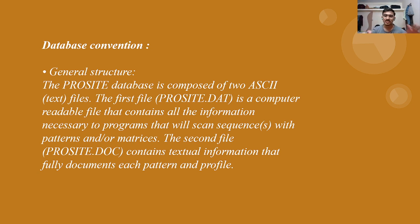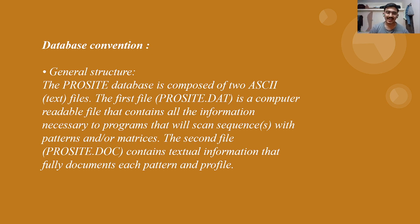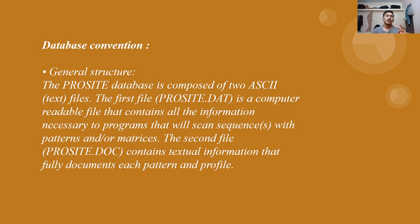The PROSITE database has two ASCII files in its general structure. ASCII stands for American Standard Code for Information Interchange. These ASCII text files are normal text files in which most characters are encoded in a blank format and are saved as .txt files. PROSITE works on these two files.